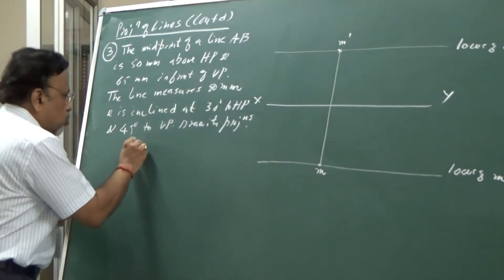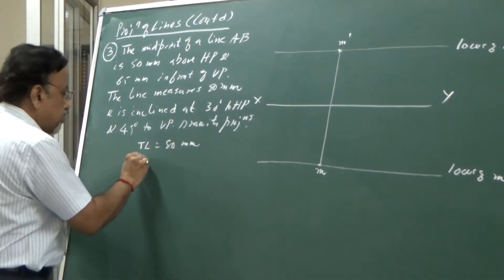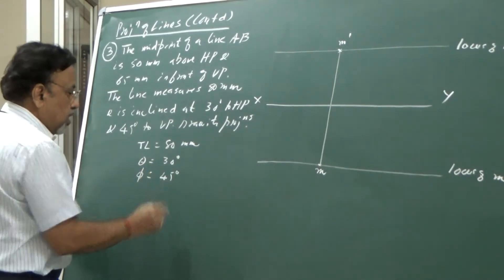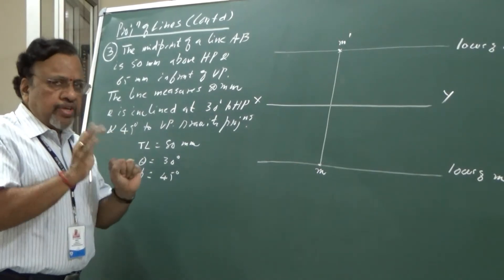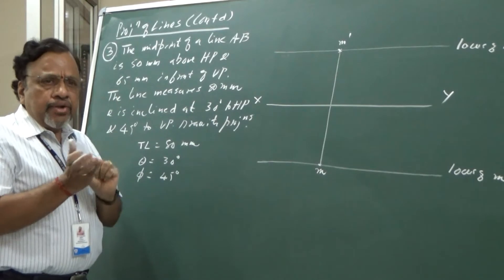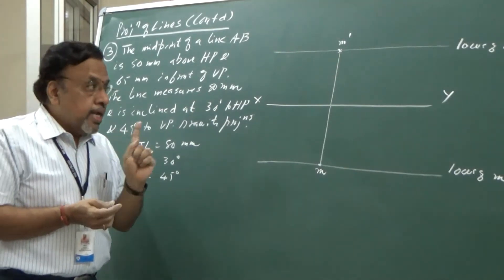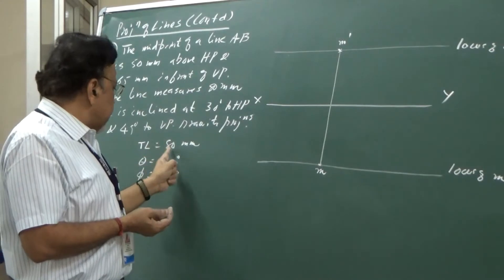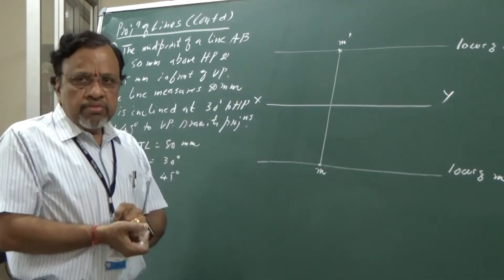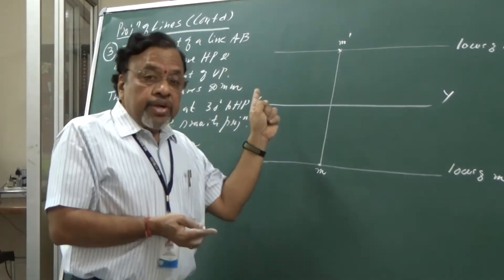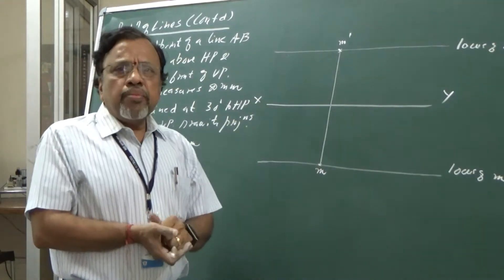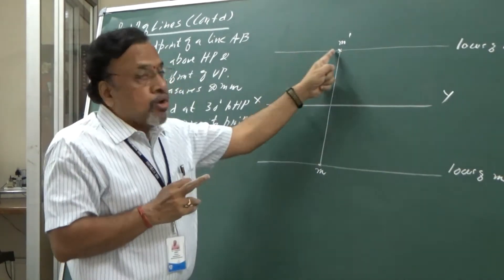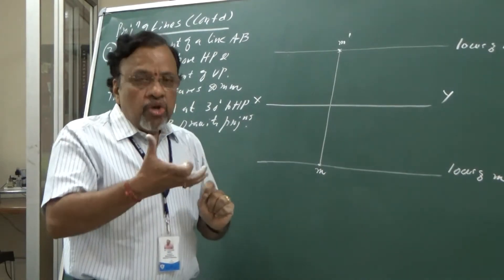The true length is given as 80 mm and it is inclined to HP at 30 degrees and inclined to VP at 40 degrees. As usual, the first step is considering the line inclined to HP and parallel to VP. Since the line is parallel to VP, I need to start from the front view. In the front view, I should draw the true length and true inclination. Now, the reference point is the midpoint M, not end A.